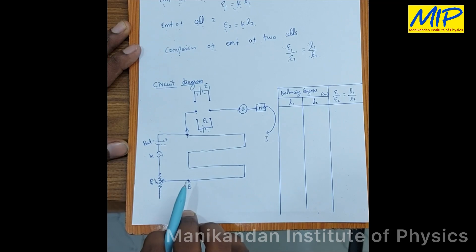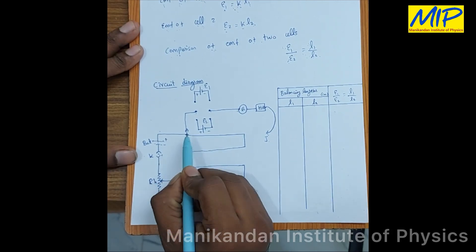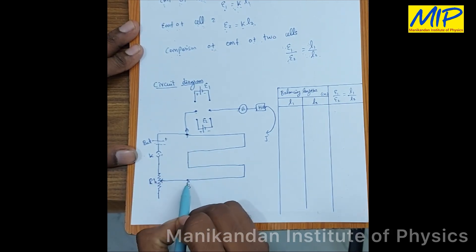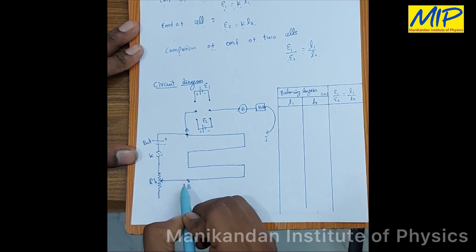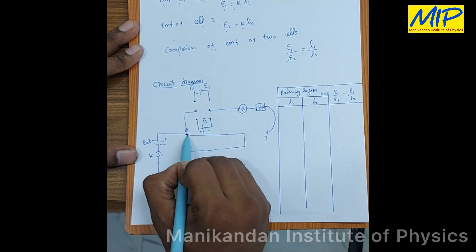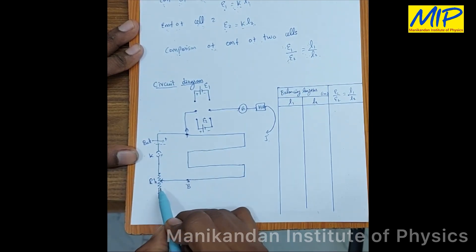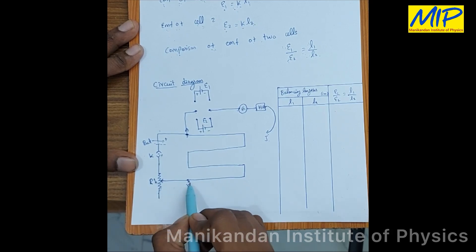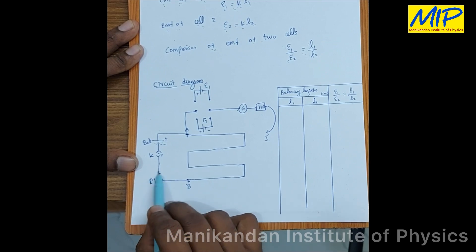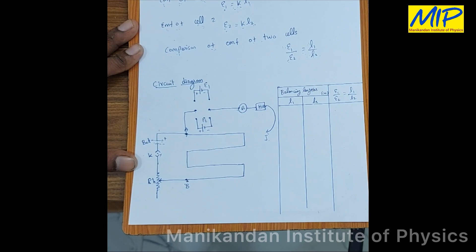Using this circuit diagram, I am going to explain how to compare the EMF of the given cells. This is the potentiometer with ends A and B. The distance between A and B is 10 meters or 1000 centimeters. One end of the potentiometer is connected with the battery eliminator, a plug key, and a rheostat. The other end of the rheostat is connected with point B. The rheostat controls the amount of current flowing through the potentiometer.